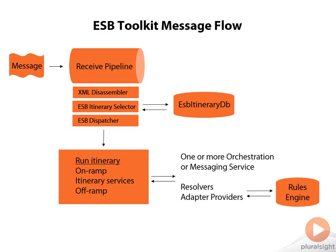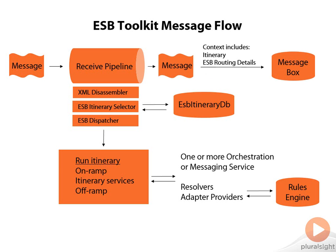Once the itinerary has completed all the steps that it can, it will send the message out of the receive pipeline. This message is then routed to the message box like any other BizTalk solution. The difference here is we now have additional context properties — the actual itinerary as a property in the context, followed by ESB routing details. On top of all this, we have the ESB management portal, and Visual Studio is used to actually create our itineraries.